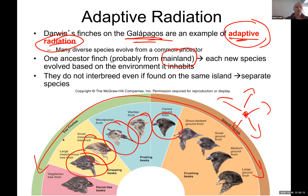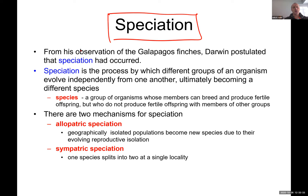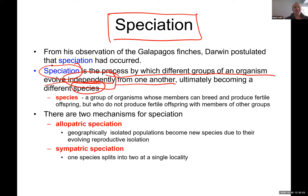A good example is the liger — a mix between a lion and a tiger. A liger can exist, but it is sterile and cannot have babies. This takes us to speciation. Speciation by definition is the process by which different groups of an organism evolve independently from one another, becoming different species. When speciation takes place, members cannot interbreed from different species anymore — only members of the same species can breed and produce fertile offspring.